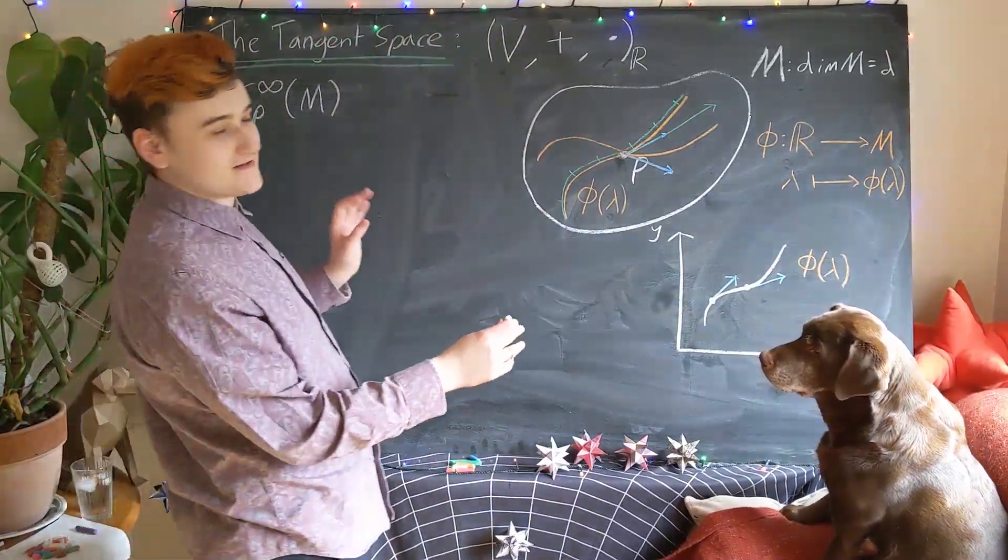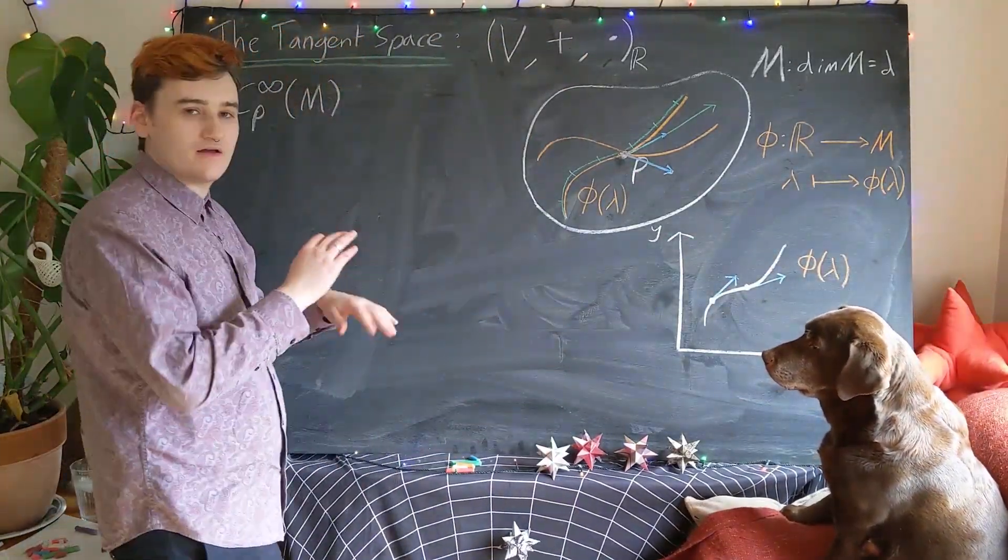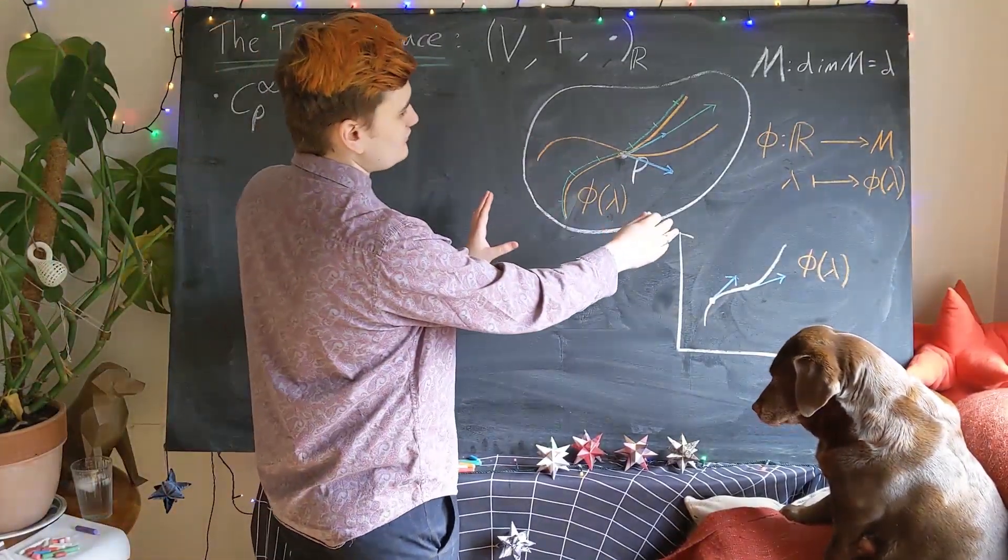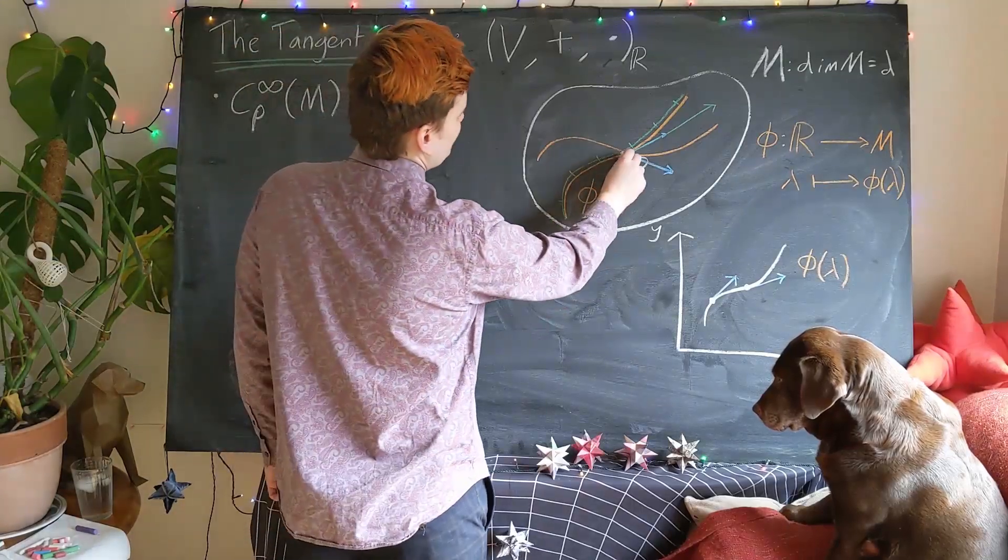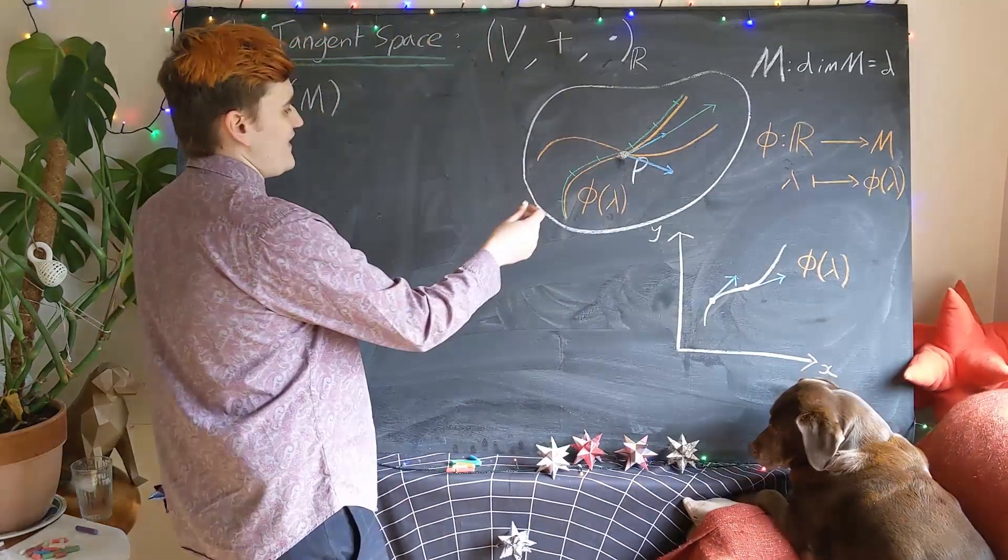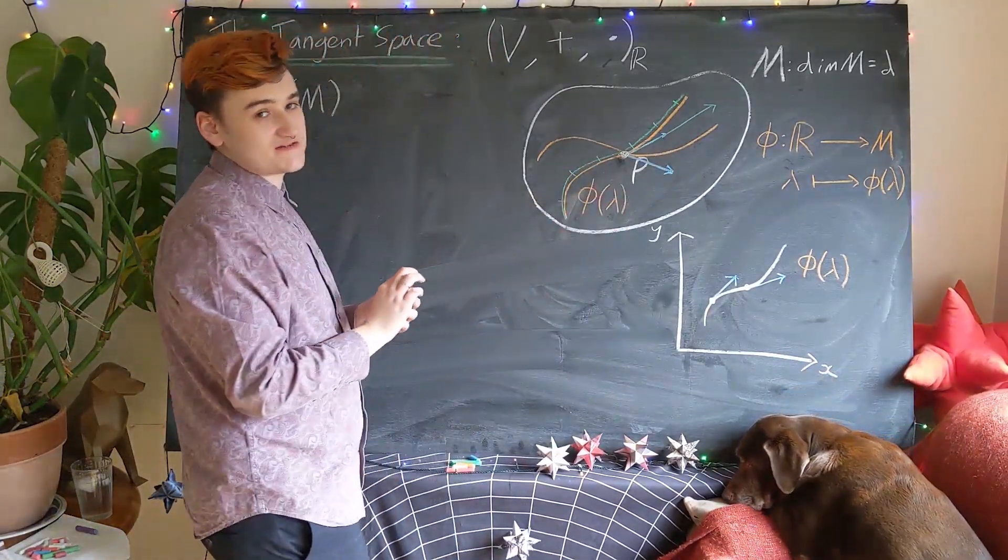Okay, so this is the intuitive picture that we should always now keep at the back of our minds when we're thinking about the tangent space. We begin with manifold. We choose the point that we want to construct the tangent space around.